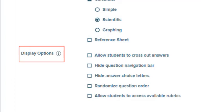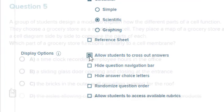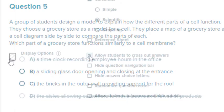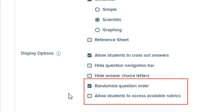Display options provide more features, such as letting students narrow their choices on multiple-choice questions by clicking the cross-out symbol next to an answer to cross it out. You can also randomize the question order or allow the students to access available rubrics.